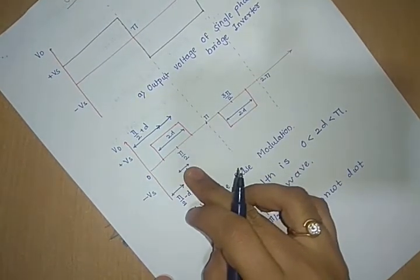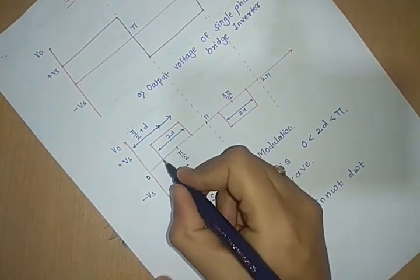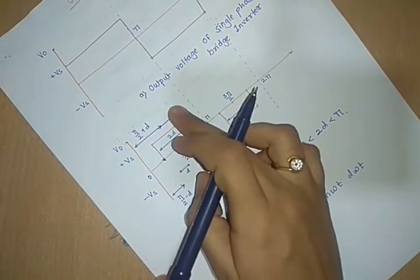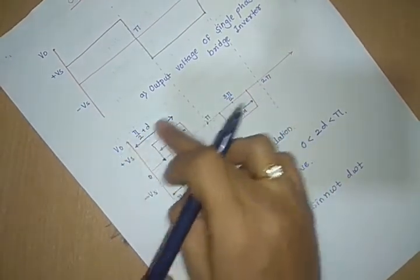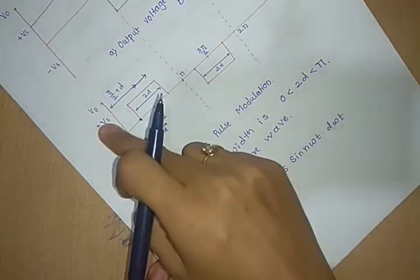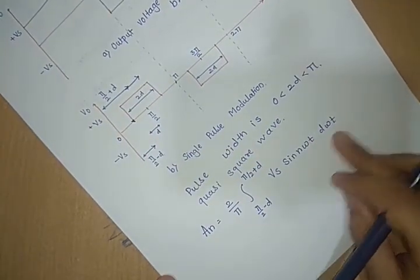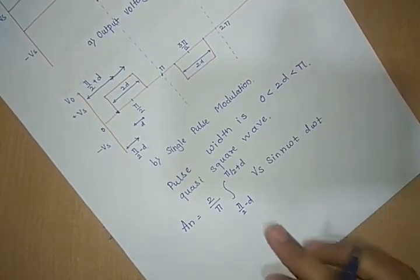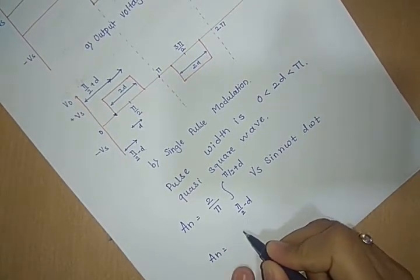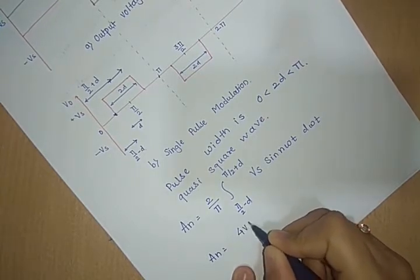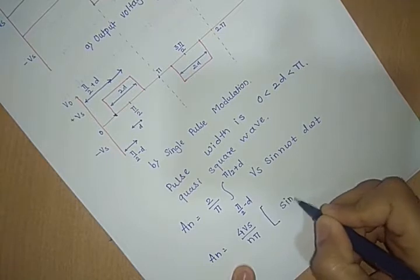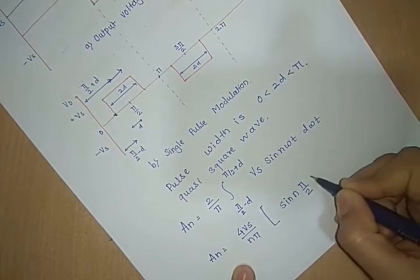The total half-duration is d, so the pulse starts at π/2 − d and ends at π/2 + d, giving us the limits π/2 − d to π/2 + d. Vs is the maximum amplitude. After solving this integral, we find that an is equivalent to 4Vs divided by nπ, multiplied by sin(nπ/2) multiplied by sin(nd). This is equation number 1.